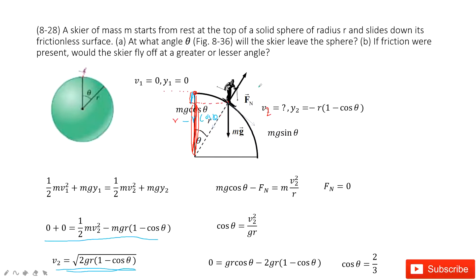Now, if this person is just at this position, we want to find when this person just leaves this circle. So how can it just leave the circle? That means there is no force between him and the circle. So that means this normal force becomes zero.